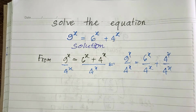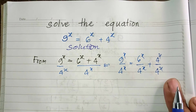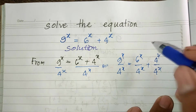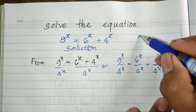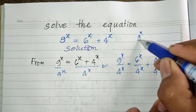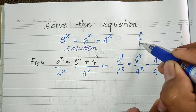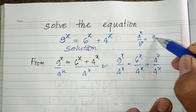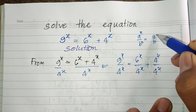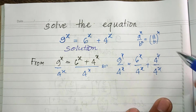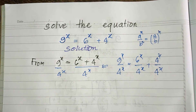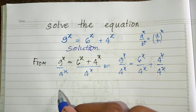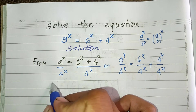I use the formula that we know: a^n divided by b^n equals (a divided by b)^n. So now we can write this as (9/4)^x equals (6/4)^x plus 1.